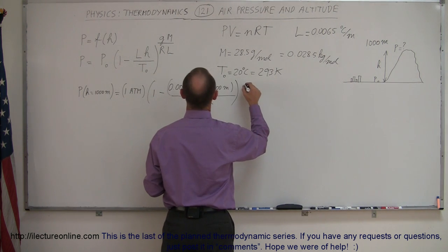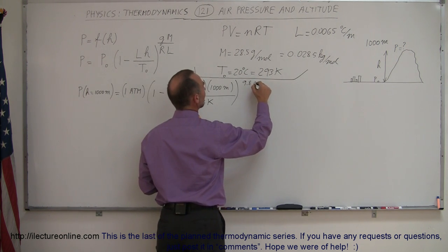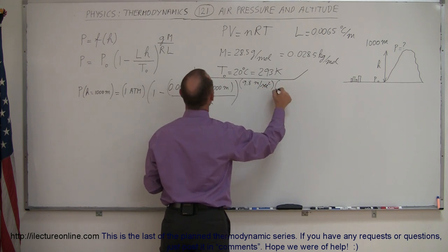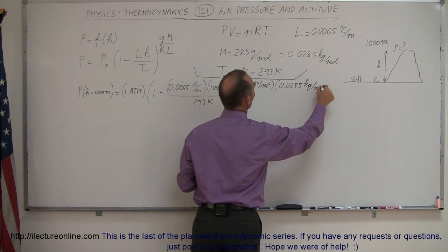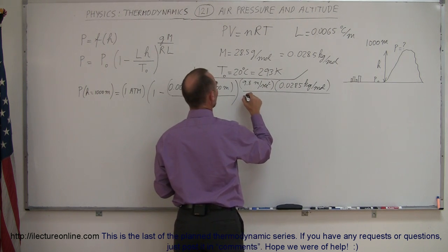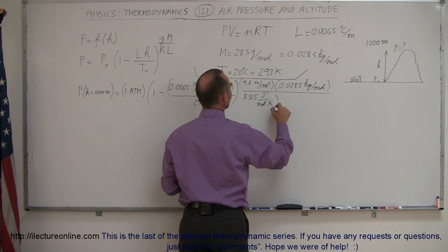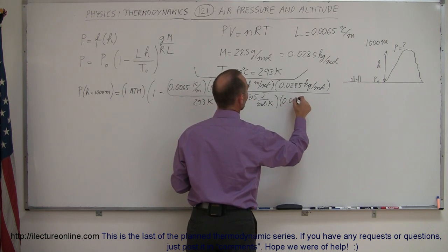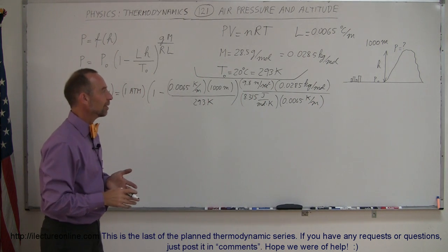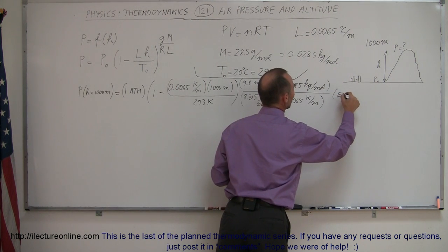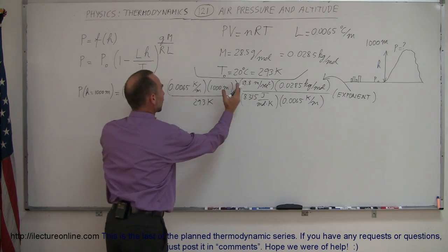And then we have G, which is 9.8, and I gave myself not enough room here. That's my exponent. 9.8 meters per second squared, times molar mass, which would be 0.0285 kilograms per mole, divided by R, which is 8.315, that would be joules per mole times Kelvin, and then L would be the lapse rate again, which is 0.0065 Kelvin per meter. Now, all those units should be canceling out. This is the exponent, because I ran out of room here. We're talking about exponent. This is not multiplied, this is supposed to be exponent, this quantity right here.